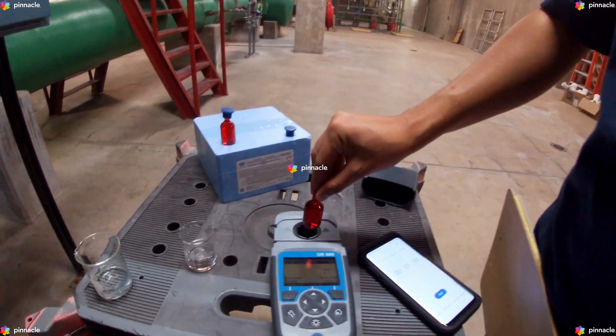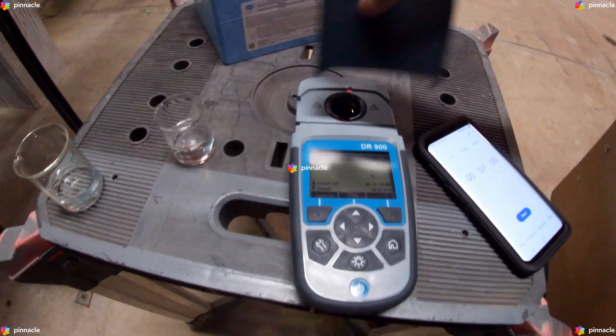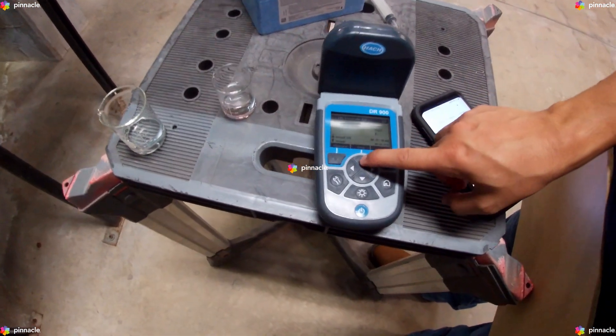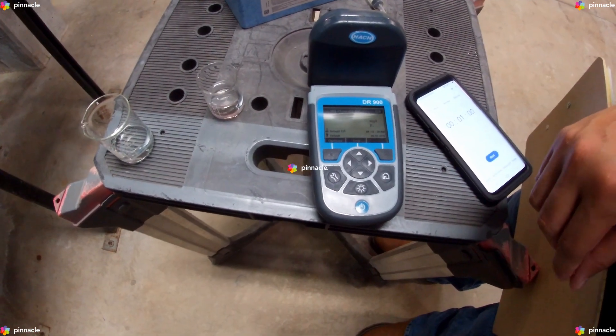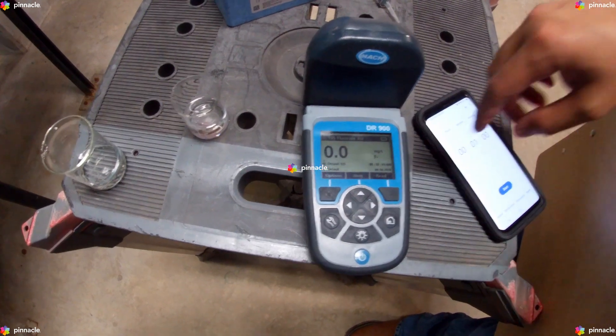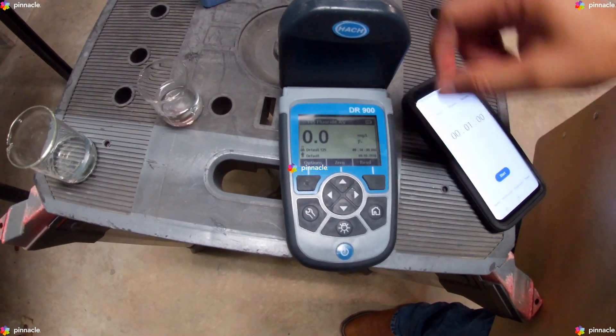We will insert the blank AccuVac Ampoule into the cell holder of our DR900 pocket colorimeter and press zero. The display shows 0 mg per liter of fluoride.